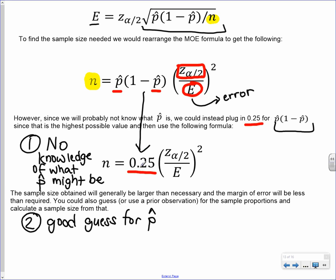So we're going to plug in 0.25 there. And the reason why we do that is because that's going to give us definitely a large enough sample size. It's probably going to give us a sample size a little bigger than what we need. But at least we know it's more than sufficient to get the level of confidence we want and the margin of error. So that is one way we can do it. And that's if we have no idea what p-hat might be.